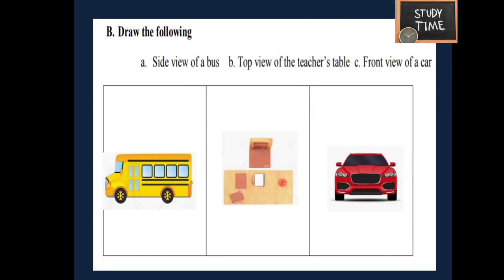Next, draw the following: the side view of a bus — so the side view of a bus would be like this. Top view of the teacher's table — so you can imagine and draw. Next, the front view of a car — you can see two wheels, headlights, and mirrors.